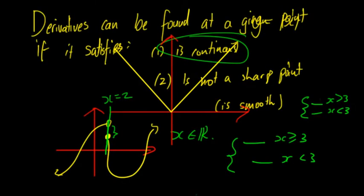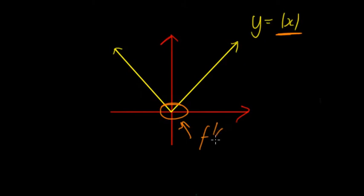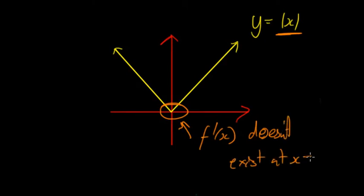The second condition is no sharp point. In this course you mainly encounter sharp points with the modulus function. The point where the modulus function switches is a sharp point — a sudden change — and you cannot differentiate there. So the derivative does not exist at x = 0 for the modulus function.